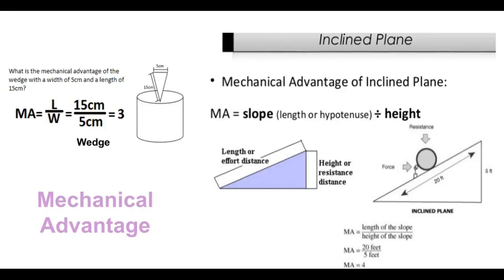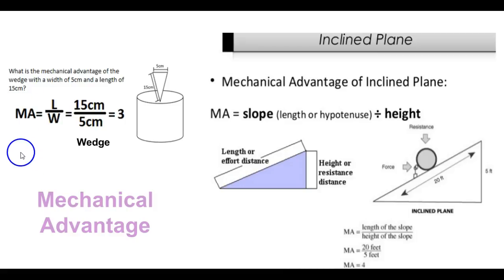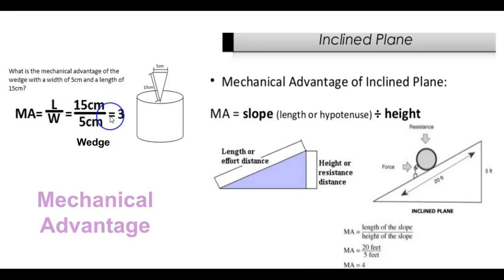Now let's talk about mechanical advantage and how to figure it out for both the wedge and the inclined plane. If we look at our wedge first, it asks: what is the mechanical advantage of the wedge with a width of 5 centimeters and a length of 15 centimeters? Our equation shows that mechanical advantage equals length over width. So substituting in our values, we get 15 centimeters over 5 centimeters, which equals a mechanical advantage of 3.